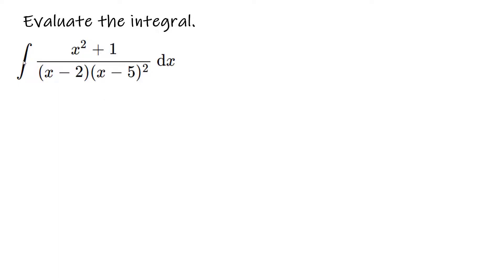Evaluate the integral. We have a complex fraction, and we want to write it as a sum of simpler fractions. This is a proper fraction because the degree on top is 2, and the degree on the bottom — x squared times x means x cubed — is degree 3, so we don't have to do long division.